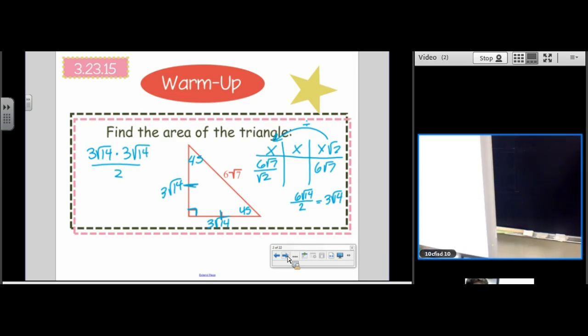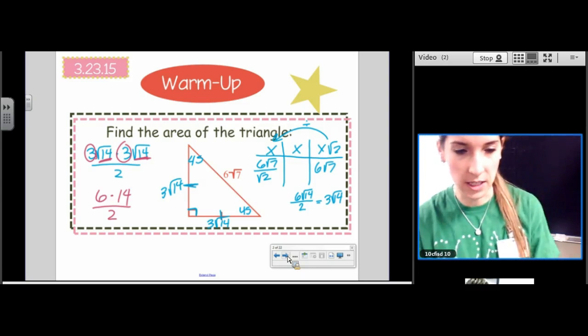So when we multiply that, we're going to multiply the integers first. 3 times 3 is 9. What's the square root of 14 times the square root of 14? It's 14. And we still have our divided by 2.